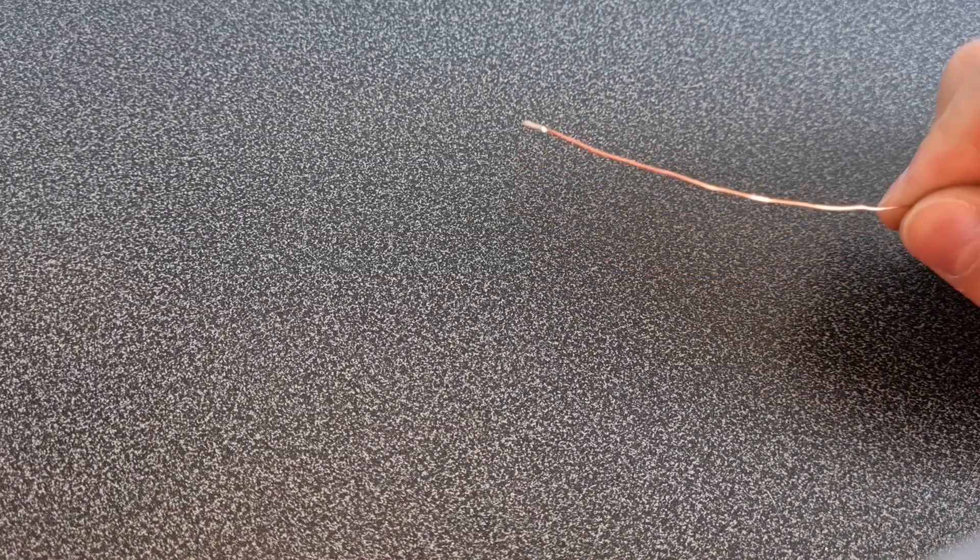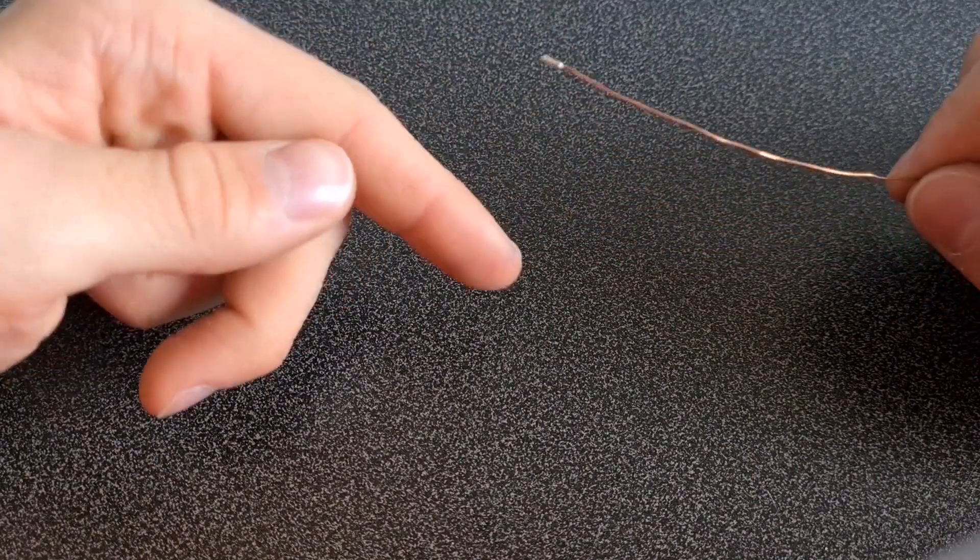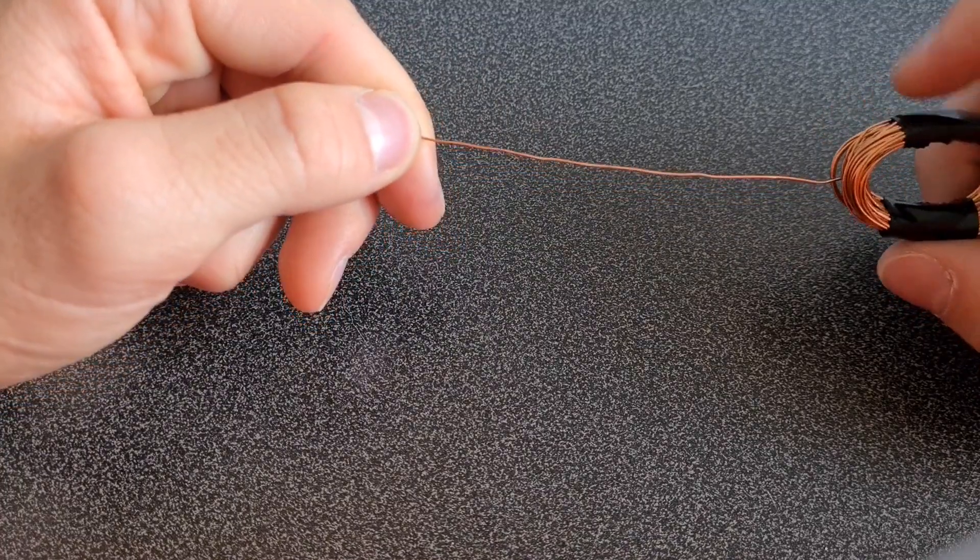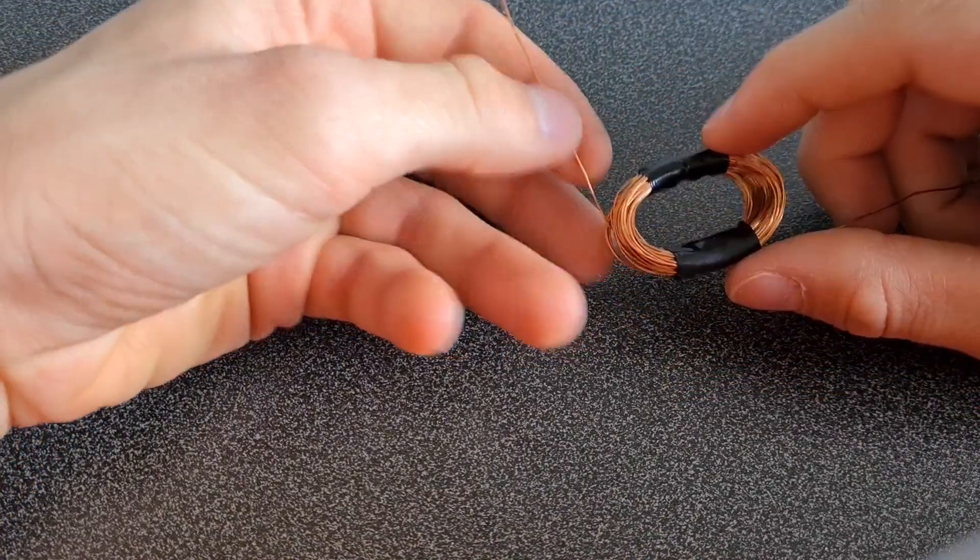When you have a wire like this and put current through it, you will create a magnetic field around the wire. This magnetic field can be focused by coiling up the wire into many turns like this.